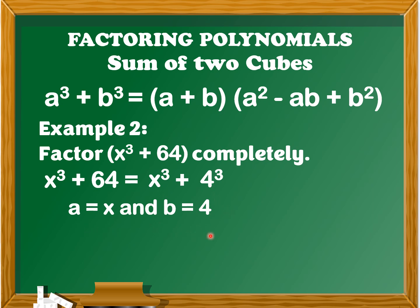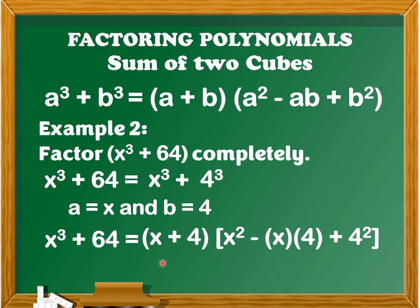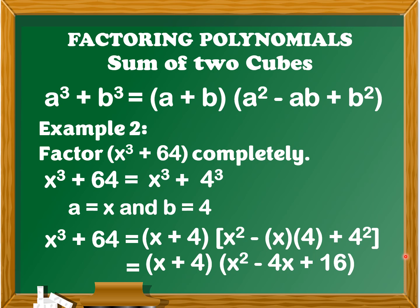After finding the value of a and b, we determine a plus b times the quantity of a squared minus ab plus b squared. So x cubed plus 64 equals x plus 4 — this is a plus b — times the quantity of x squared minus ab which is x times 4, plus 4 squared. Simplifying: x plus 4 times the quantity of x squared minus 4x plus 16. Therefore, x cubed plus 64 equals x plus 4 times the quantity of x squared minus 4x plus 16.